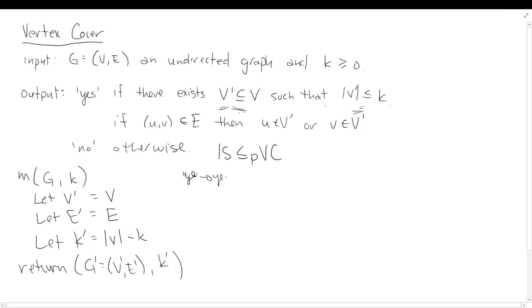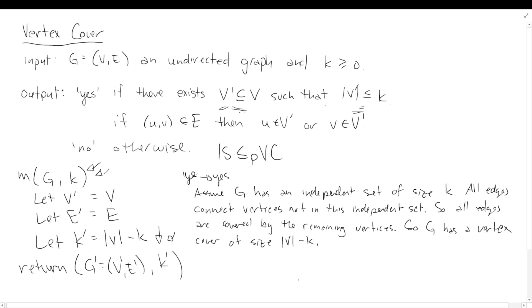But we need to prove it's correct, too. So again, I'm going to do a yes implies yes. And again, here that means if we have a yes instance here, we get a yes instance down here. So assume G has an independent set of size K. So that makes it a yes instance above here. Now what we need to argue is that this graph down here has a vertex cover. So what I'm going to now say is that all edges connect vertices not in this independent set. So all edges are covered by the remaining vertices. So G has a vertex cover of size V minus K. Well, that's what we set up over here. This is K prime. This is G prime. So we're done.